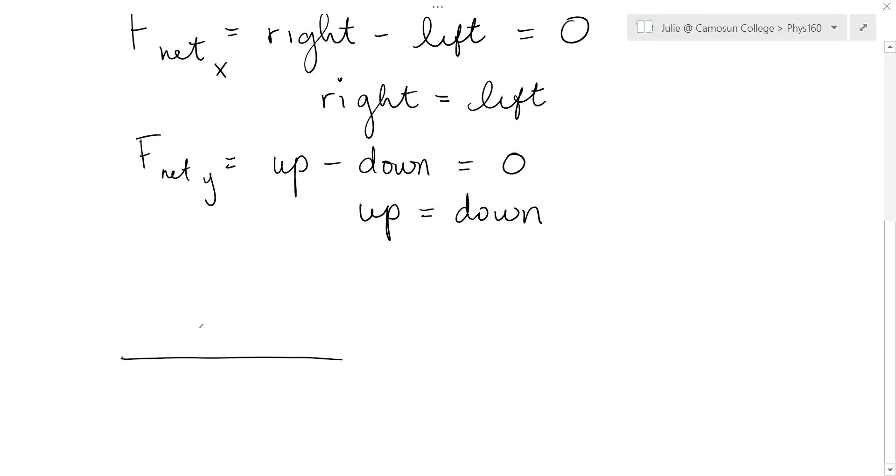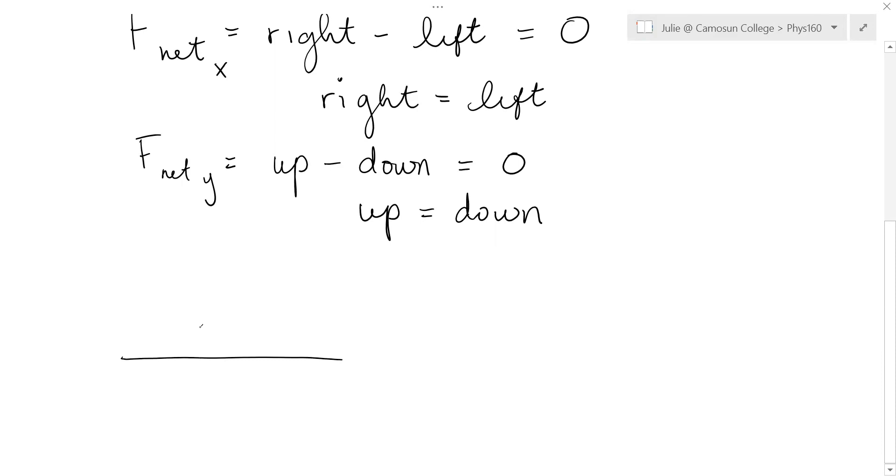Now for some really simple situations, you can just look at it and figure out unknown forces. So if something is pulling this box to the right at 20 newtons and maybe the force of friction or some other force was 15 newtons, you would know there's an extra force here, F. Forces to the right are 20, forces to the left are 15 plus that extra force, and so that extra force must be 5 newtons.